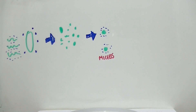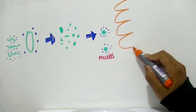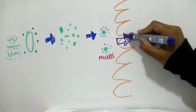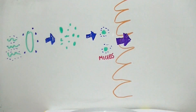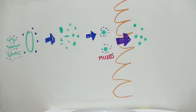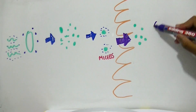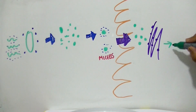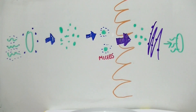When they reach the epithelium, the micelles detach, and as monoglycerides and fatty acids are soluble, they simply diffuse directly across the epithelial cell membrane. When they pass through the endoplasmic reticulum, they are then converted back into triglycerides.